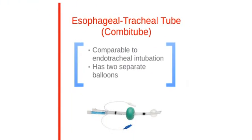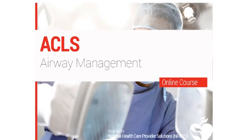The esophageal tracheal tube, or COMBI tube, is an alternative to endotracheal intubation. It provides adequate ventilation comparable to an endotracheal tube. It has two separate balloons. That concludes this lesson.